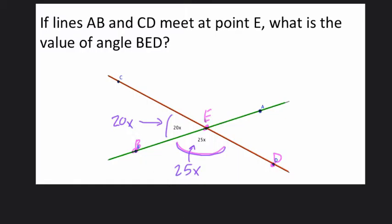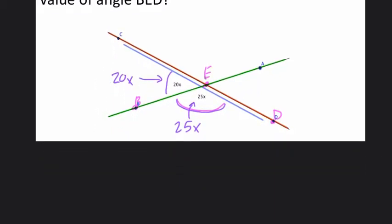Now together, these two angles form a straight line, right? So they form this line right here. That means they're supplementary and add up to 180. So we can use that fact to quickly write the expression that if we add these two angles, 20X plus 25X, that equals 180.